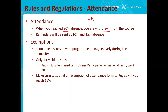If you know you'll be away — for example, playing on the national team — submit the exemption of attendance to the registry so they can fix your attendance. Don't wait until your attendance reaches 20% because then it will be very difficult to fix things. Once you're removed from a course, you cannot be reinstated. If you reach 20%, you'll automatically be withdrawn and bringing you back on the course is almost impossible, so make sure you keep track of your attendance.